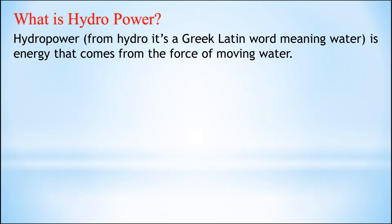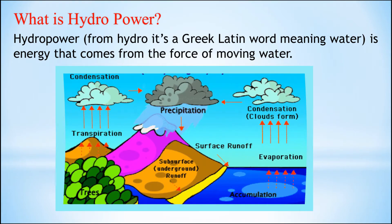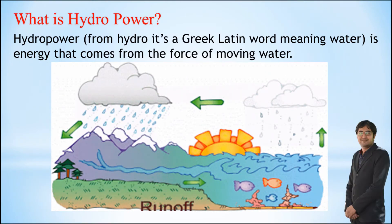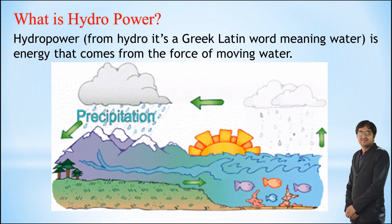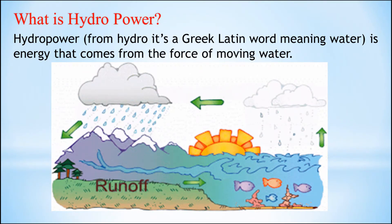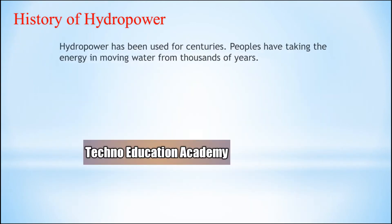Hydropower is the energy that comes from the force of moving water. The fall and flow of water is part of a continuous natural cycle. The Sun draws moisture up from the ocean and rivers, the moisture condenses into clouds, then falls as rain or snow, refilling the ocean and rivers. This is why hydropower is called a renewable energy source — it is replenished by snow and rainfall.